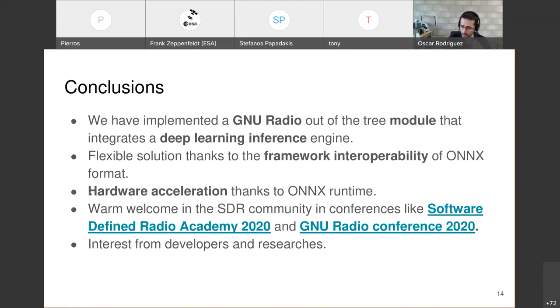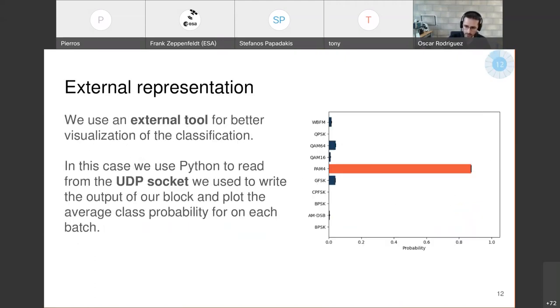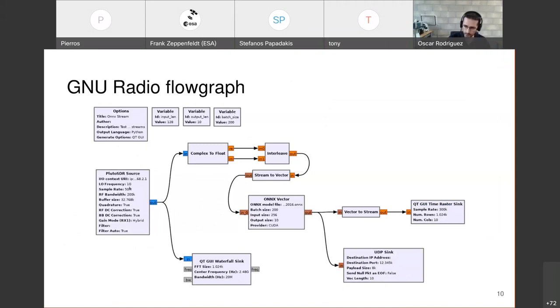If we can comment on the hardware acceleration, for example, we tested this flowgraph with the Pluto SDR source, which has a USB 2 connection. In CPU with one single batch, we were getting around 3.3, 3.4 megabytes per second and the same in the GPU. Once you start increasing the batch size, you get more performance. You can even saturate the USB link or even if you are trying to do inference with a file inside GNU Radio, you also saturate the SATA connection of the hard disk. But this depends on your hardware. The more powerful hardware you have, the more performance you will get. And I think that's all.